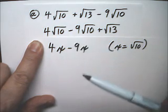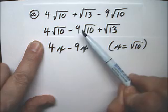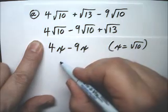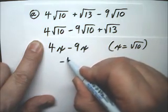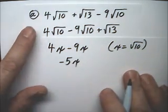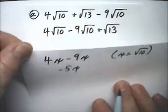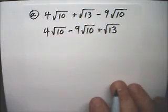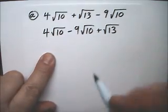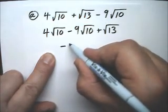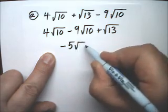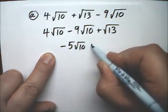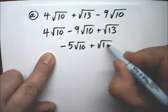So that's what we have here. 4 of these take away 9 of these. And all together, that's minus 5 of these. So in that way, 4 radical 10 minus 9 radical 10, well, that's negative 5 radical 10 plus radical 13.